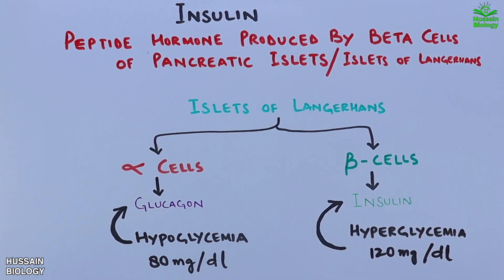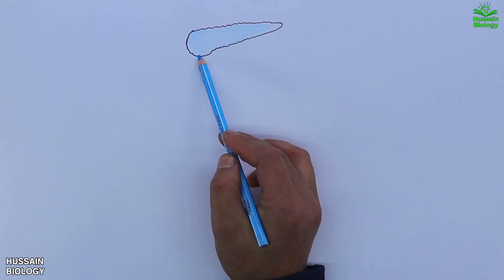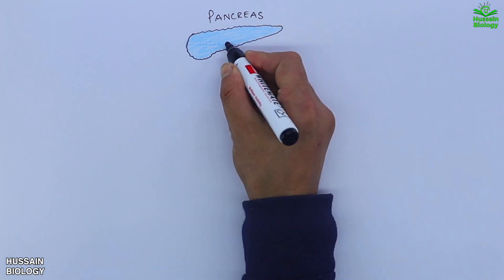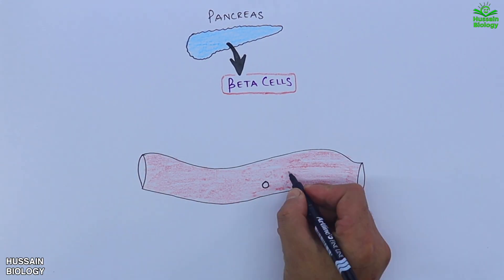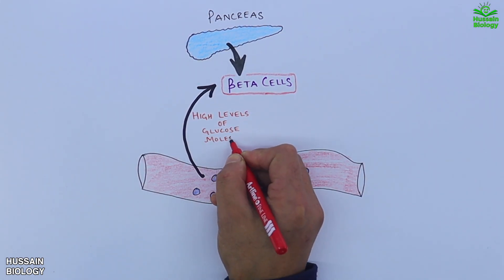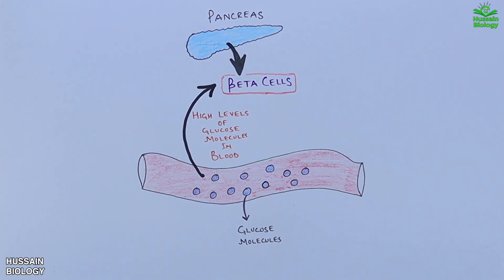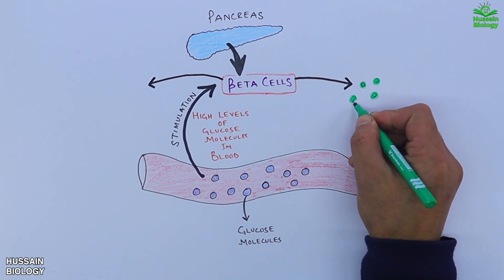Now let's see the target organs of insulin and its effects. The pancreas has beta cells, and on the other hand we have blood circulation which has high levels of glucose in it, as shown in the diagram. This high concentration of glucose in the blood stimulates beta cells to secrete insulin.